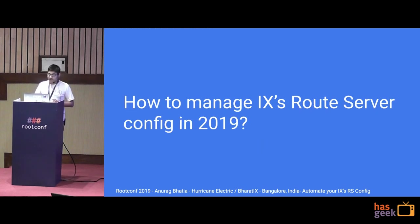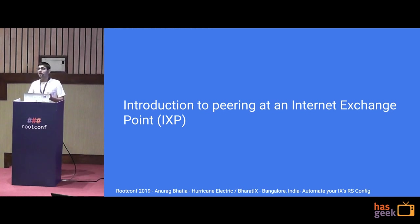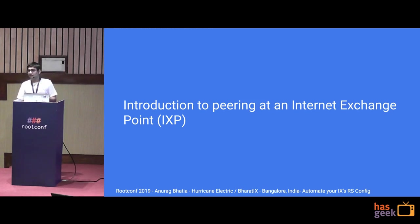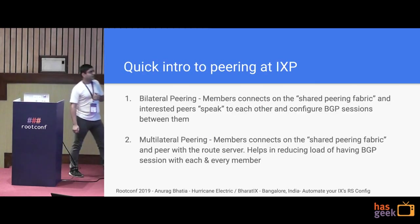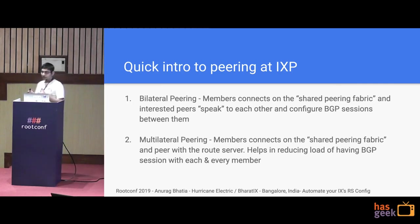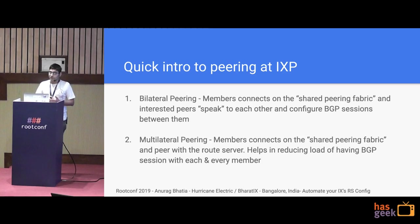Today's talk is about how you automate your route server's config. I'll give an introduction to what a route server is and how it works. First, how networks interconnect at internet exchanges. Imagine a network like Google, Microsoft, or LinkedIn interconnecting with eyeball networks like Airtel or ACT at an exchange. There are two possible options. One is bilateral peering, where members all connect on the same layer 2 switch, create BGP sessions with each other, and start exchanging routes.